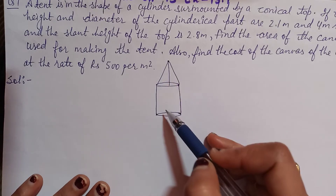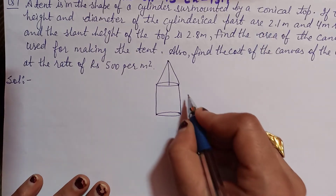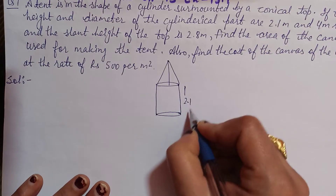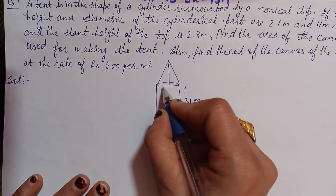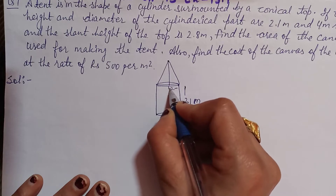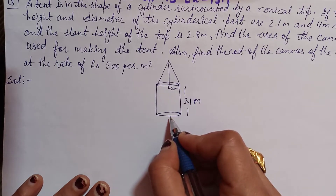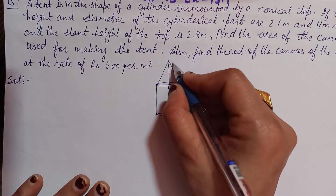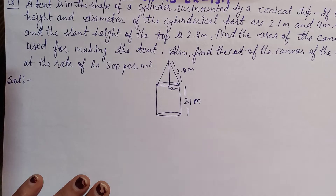The height given for the cylinder is 2.1 meter. The diameter given is 4 meter, so the radius we need is 2 meter. And the slant height given is 2.8 meter. That is the given information, beta.